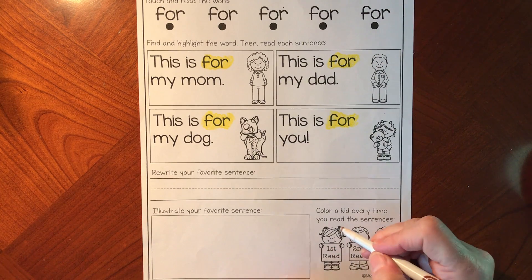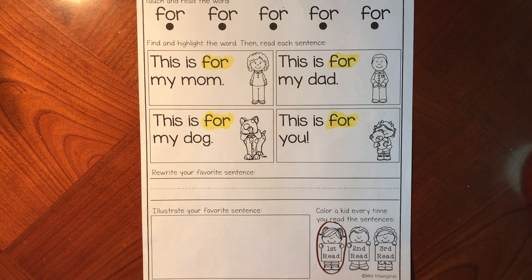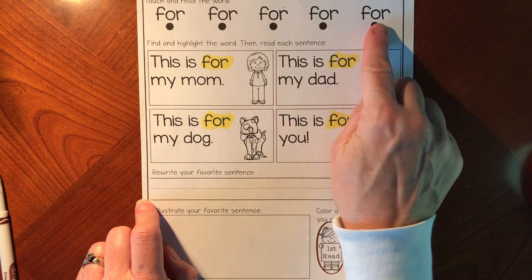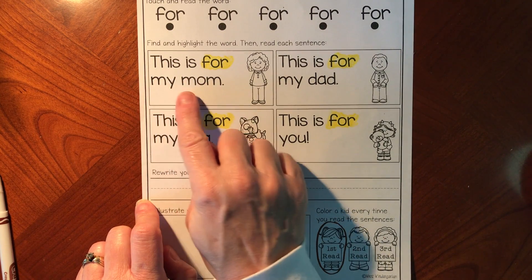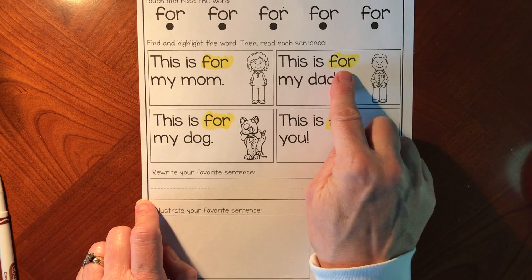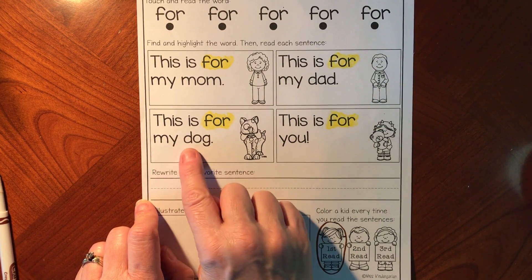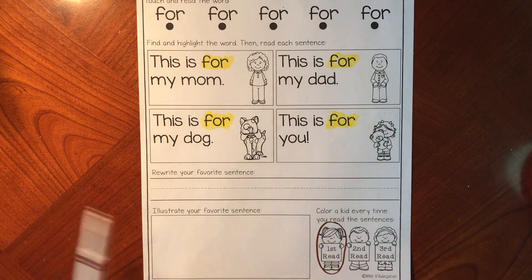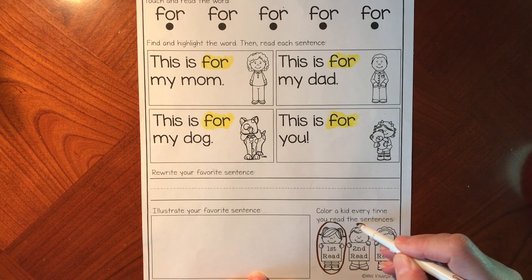Now that was our first time reading. So let's circle the first child — if you'd prefer to color you can, but circling is a lot faster. We have two more times to read. Let's do it. Ready friends? For, for, for, for, for. This is for my mom. This is for my dad. This is for my dog. This is for you. I got a little excited because of the exclamation point. That's my second time reading.